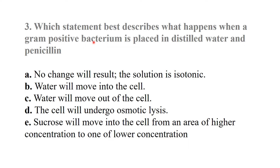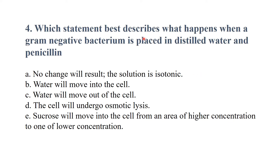Which statement best describes what happens when a gram-positive bacterium is placed in distilled water and penicillin? Because penicillin affects gram-positive bacteria, it causes cell wall damage. The best answer is the cell will undergo osmotic lysis.